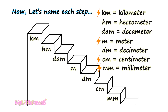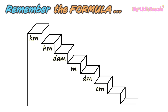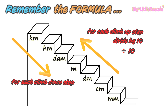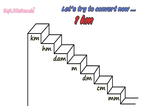In this stair, Km — the kilometer — is the biggest unit of measurement, while mm, the millimeter at the bottom, is the smallest unit of measurement. The most commonly used are kilometer, meter, centimeter, and millimeter. I have put a flash sign for them and you don't really have to worry about the rest. Next, you need to remember the formula: for each step you climb up, you need to divide by 10; for each step you climb down, you need to multiply by 10.